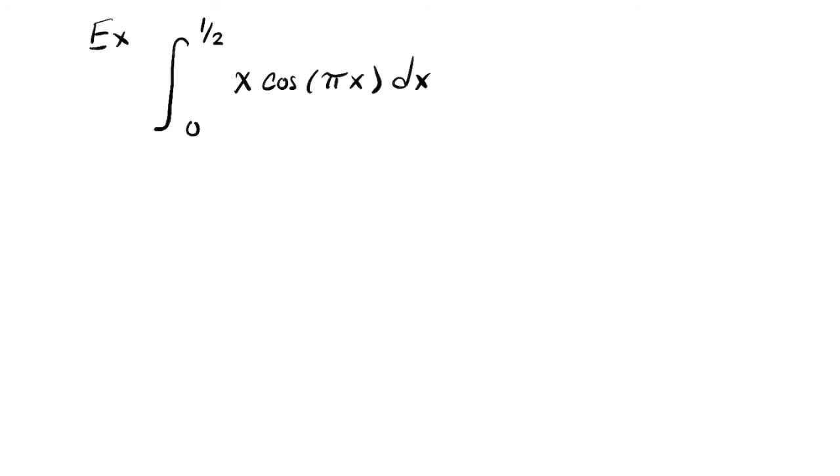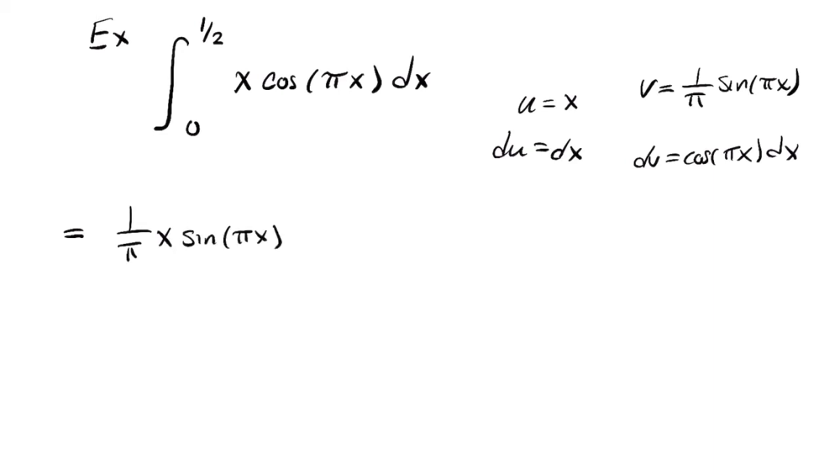Here's a definite integral. I'm going to use parts. I'm going to take u to be x, dv to be the cosine of pi x dx. So du is dx. V is sine of pi x, but I need a 1 over pi to make the derivative come out right. So I write down x times 1 over pi times the sine of pi x, and I'm going to evaluate that from 0 to 1 half. Minus 1 over pi the integral of sine of pi x dx, and that's also an integral from 0 to 1 half.